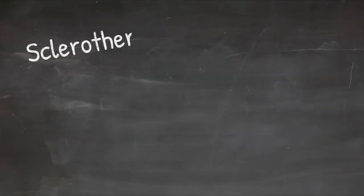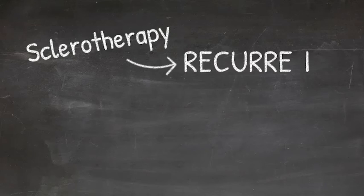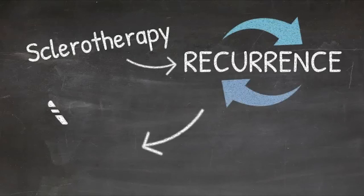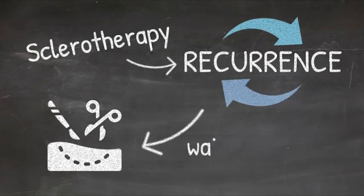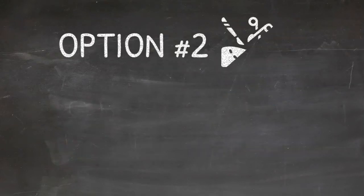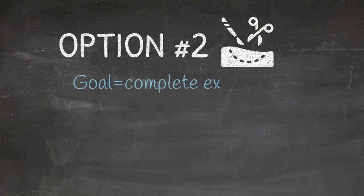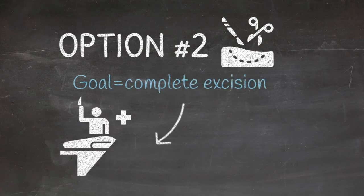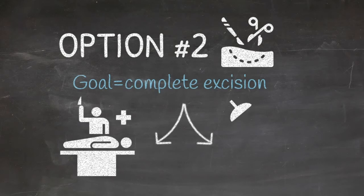If you do a sclerotherapy procedure and the cyst recurs and you need to move on to surgical therapy, you want to wait at least three months after the sclerotherapy procedure before considering surgery, in order to let the substantial inflammatory reaction subside. If you're going to resect, meaning you can't manage it with aspiration and sclerosis, then your goal should be complete excision of the cystic lesion. You can do that either open or laparoscopic, depending on your comfort level.